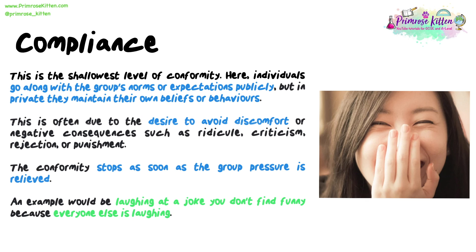Compliance. This is the shallowest level of conformity. Here, individuals go along with the group's norms or expectations publicly, but in private they maintain their own beliefs or behaviours. This is often due to the desire to avoid discomfort or negative consequences, such as ridicule, criticism, rejection or punishment.